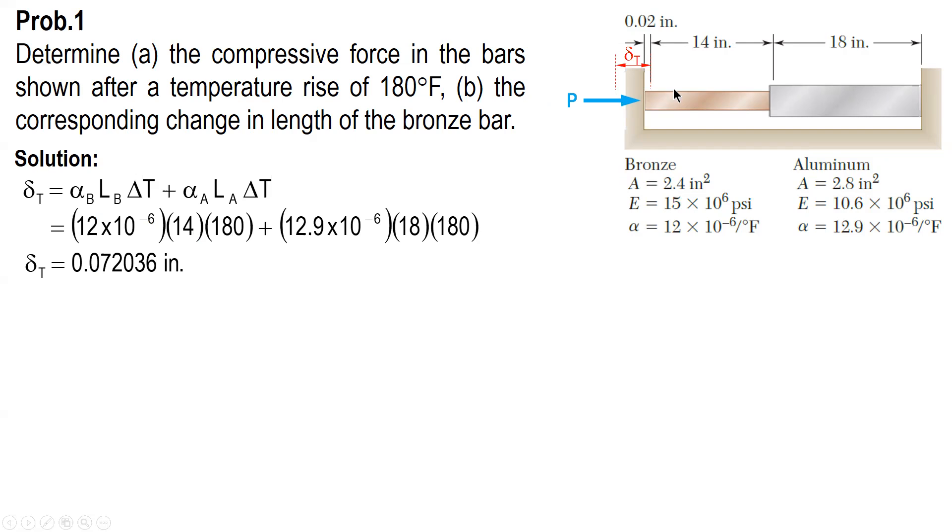The total shortening is this one. Delta A or delta. This delta is due to axial force. The formula is PL over AE. And the value of this is the total shortening of bronze and aluminum.